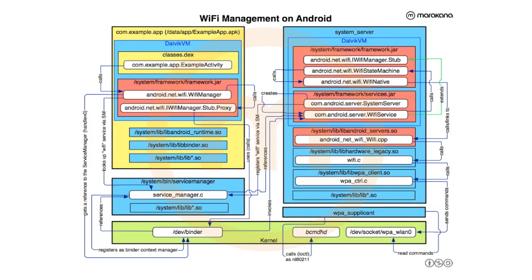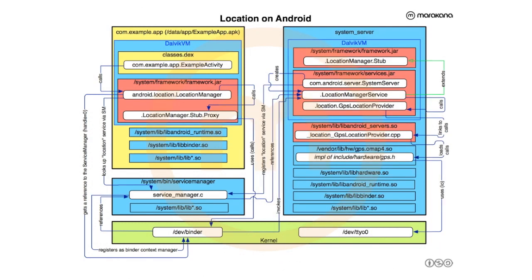Q: Why use Unix sockets to communicate between the system server and these daemons rather than Binder? A: wpa_supplicant comes from Linux already — it has a built-in client/server framework using Unix sockets, so rather than re-implementing the wheel, Android reuses that interface. Q: Does Android make many changes to wpa_supplicant? A: It's in the external directory, so they try to stay as close to upstream as possible, but I can't quantify the percentage. Different devices support different versions of wpa_supplicant depending on their drivers.